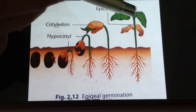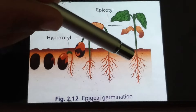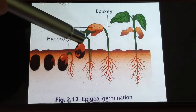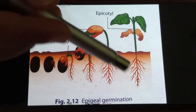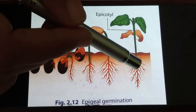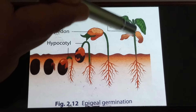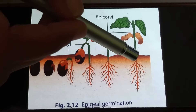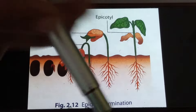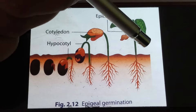Once the leaves are fully developed, the cotyledon will dry off and fall. The portion of the stem below the cotyledon is known as the hypocotyl, and the portion above the cotyledon is known as the epicotyl. In epigeal germination, the hypocotyl elongates — it becomes bigger in size — pushing the cotyledons above the soil. This is the reason why the cotyledon is above the soil in epigeal germination.